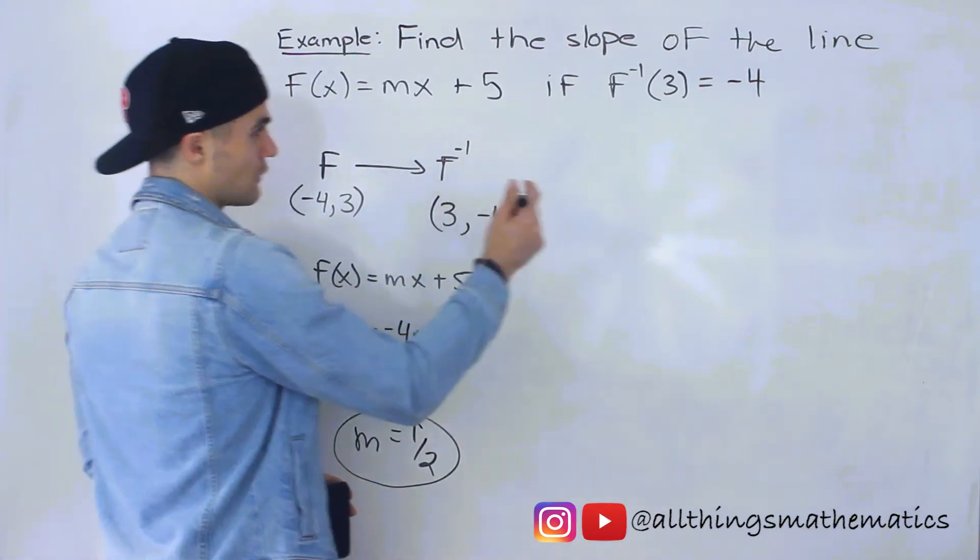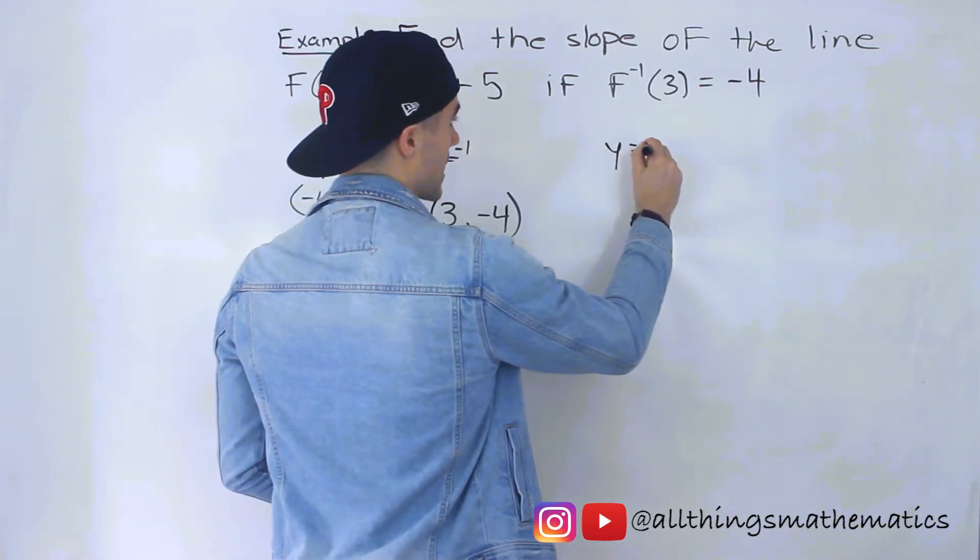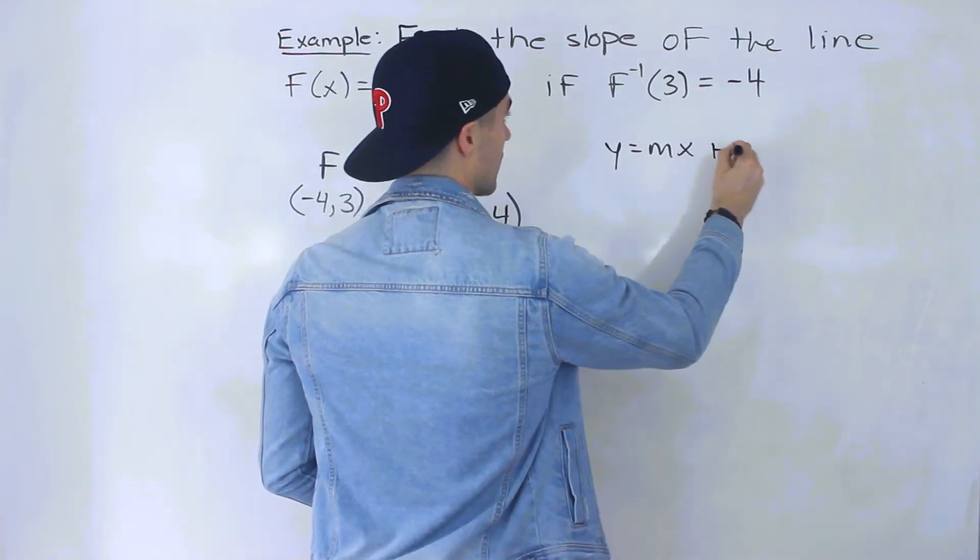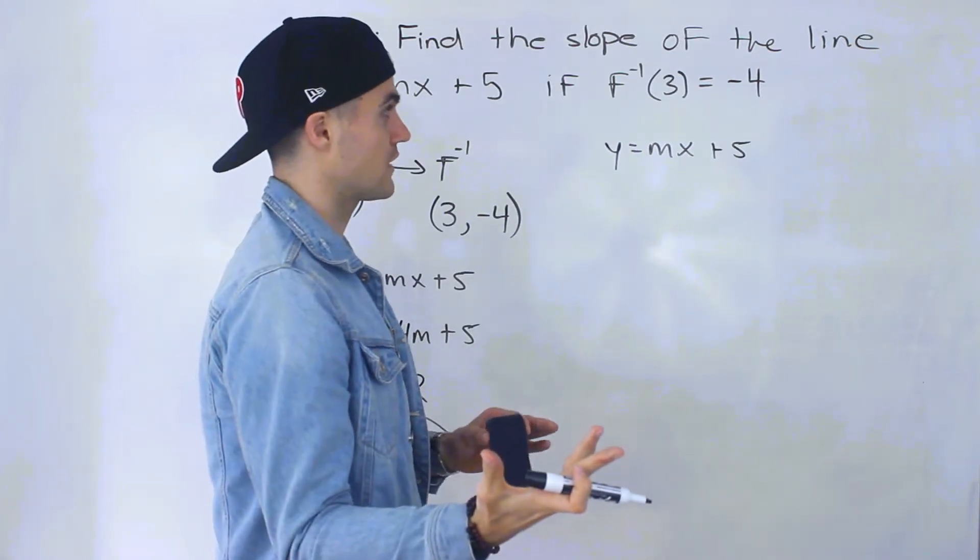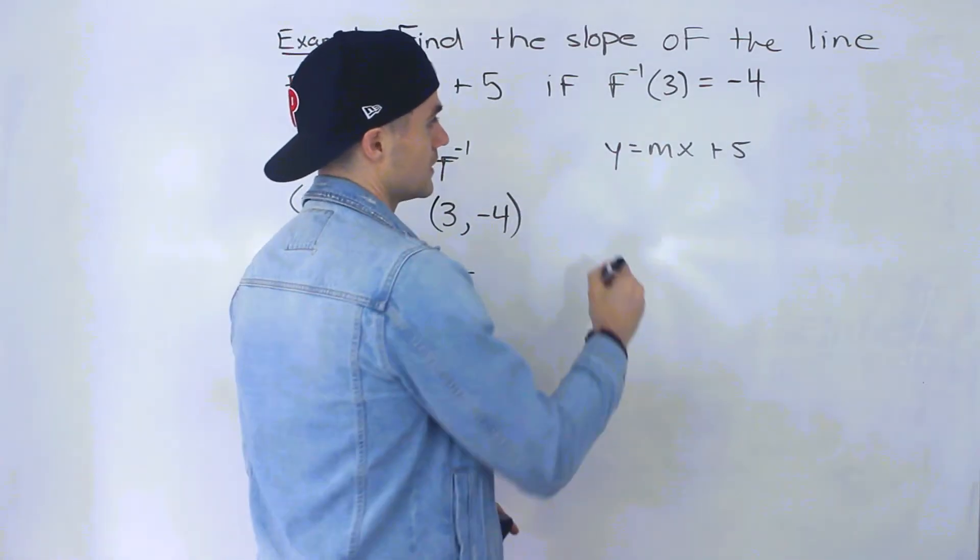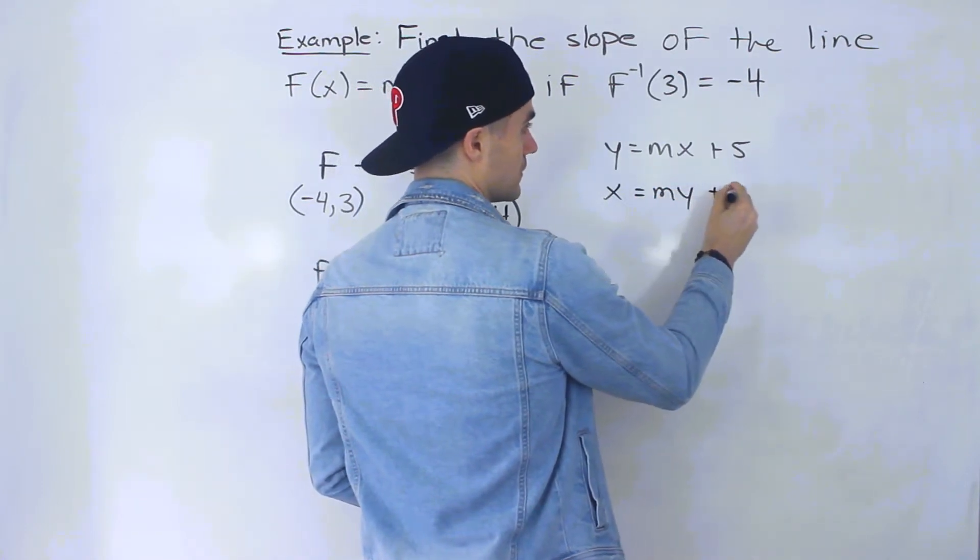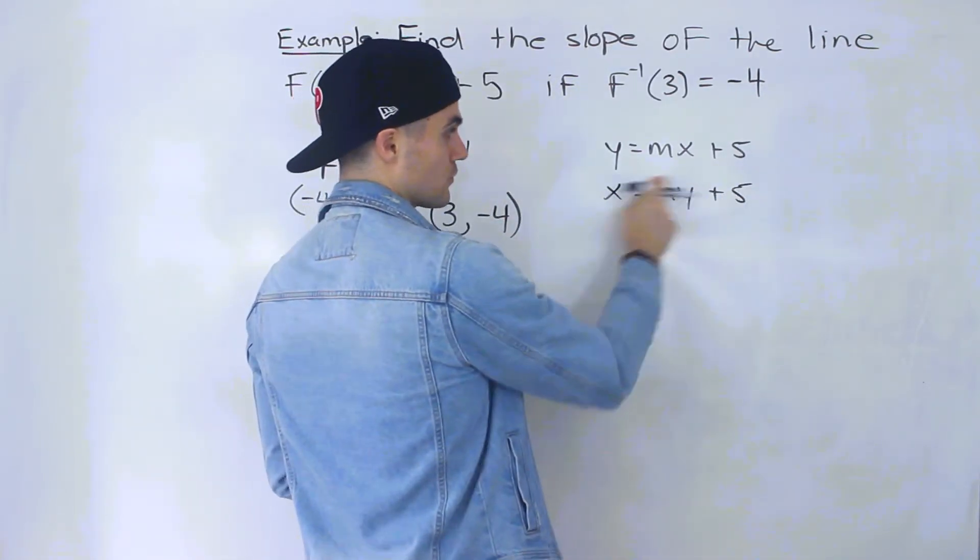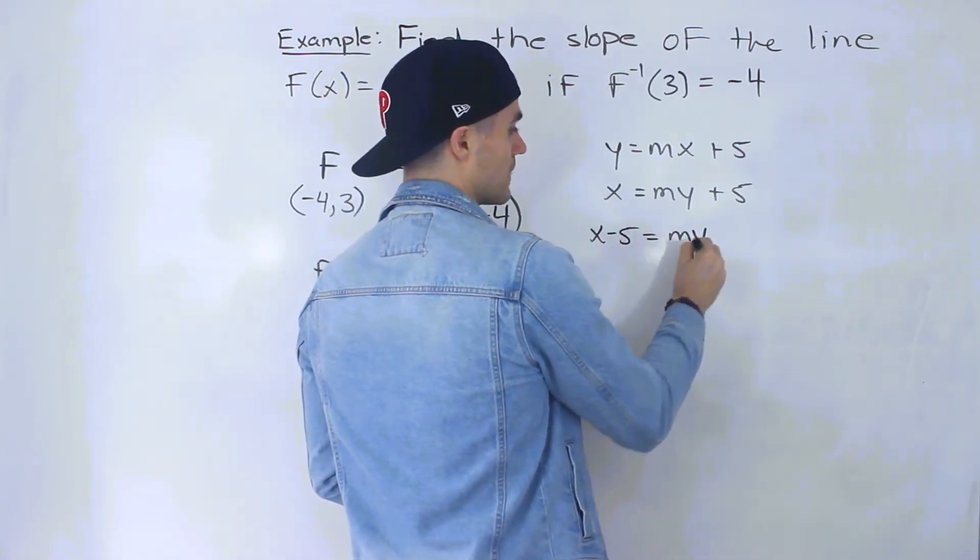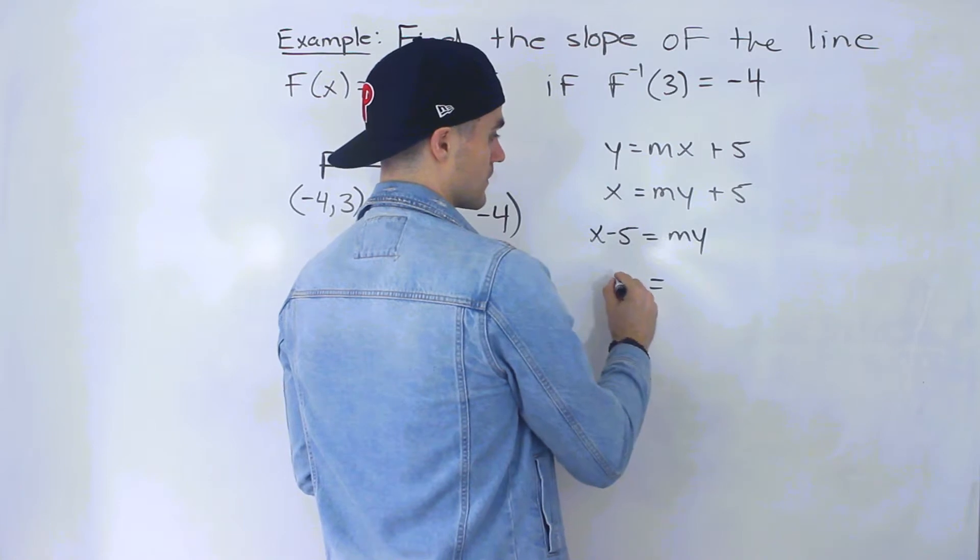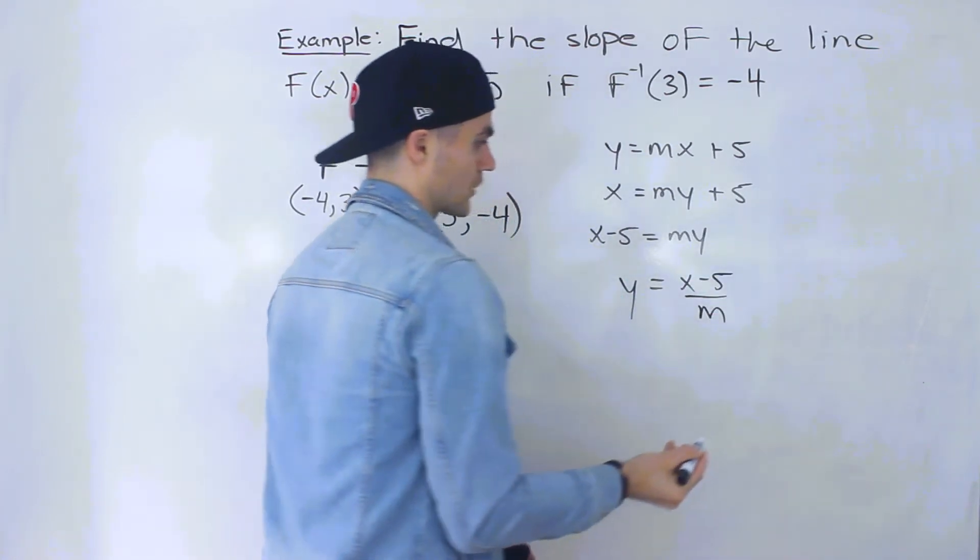Another way to do this, a tougher way, is we could rewrite the function as y = mx + 5. And what we could do is come up with an expression for the inverse and then plug this in. So to do that, we have to interchange the x and y values and then isolate for that y. So if we bring the 5 over, we'll have x - 5 = my. Divide both sides by m, so y would equal (x - 5)/m.